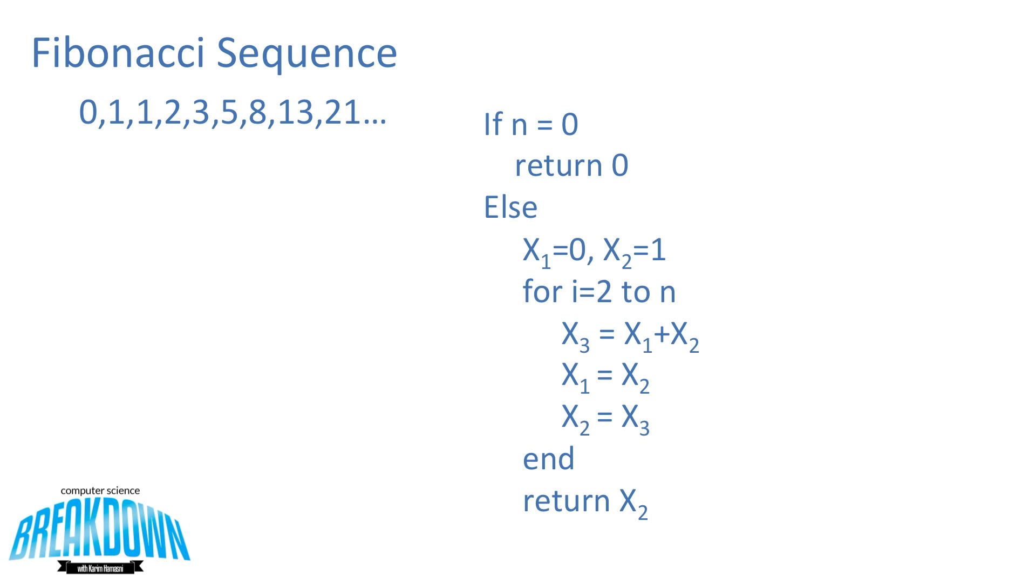Then, we have a loop from the values 2 to n. In the loop, we set x3 equal to x1 and x2. x1 is now equal to x2. x2 is now equal to x3, and it continues this on for a loop until it reaches n, and then it returns the value for x2.